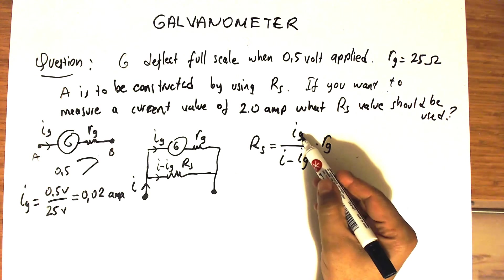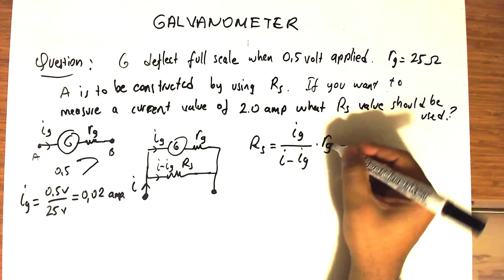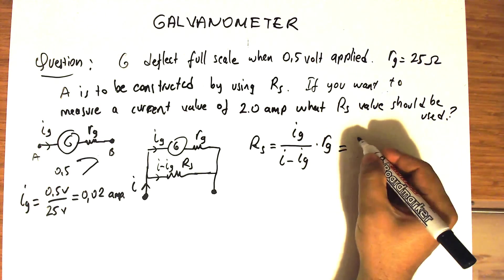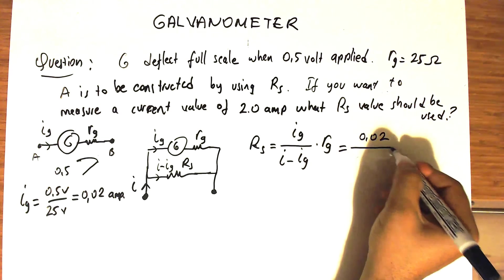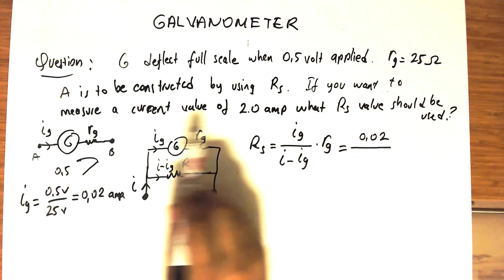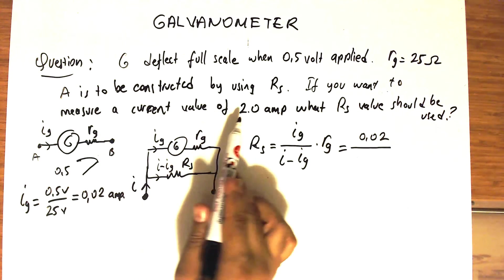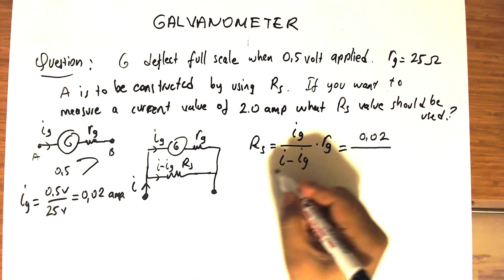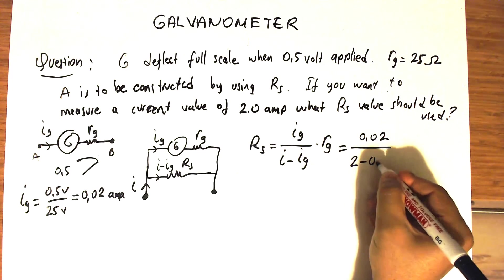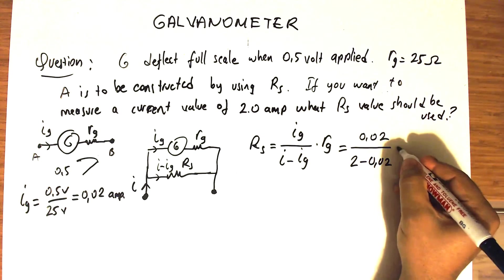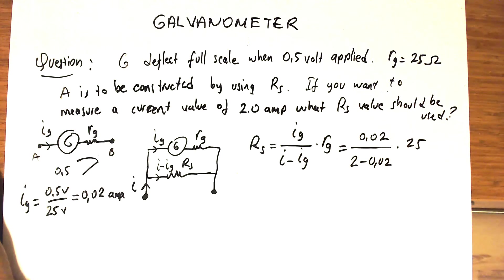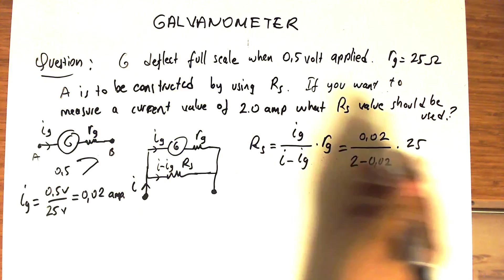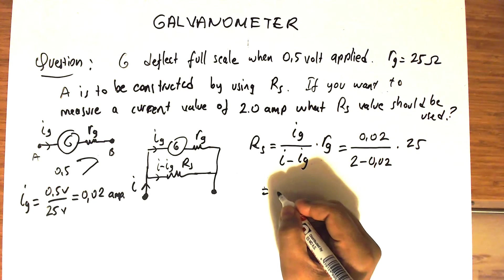ig is nothing but 0.5 volts divided by 25 ohms, and this is nothing but 0.02 amperes. Now that we know what ig is, we can plug this into this equation: 0.02 divided by, since we want to use the maximum value of current which is 2 amperes, i is set to be 2 minus 0.02, multiplied by 25.